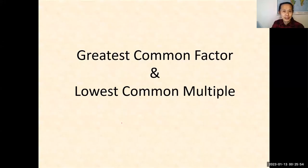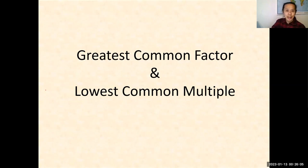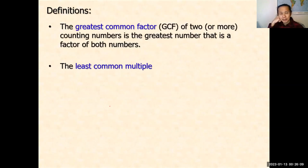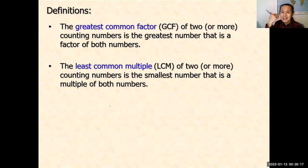In this video, I'll explain the greatest common factor and lowest common multiple, and show three ways to find the GCF and LCM of two specific numbers. So let's take a look at the definitions first. The greatest common factor of two numbers is the greatest number that is a factor of both numbers, and the LCM of two numbers is the smallest multiple of both numbers.